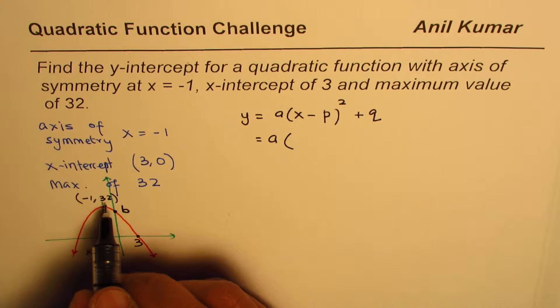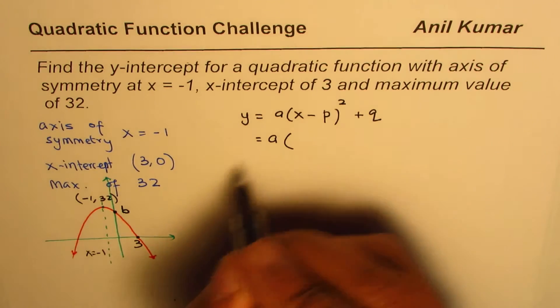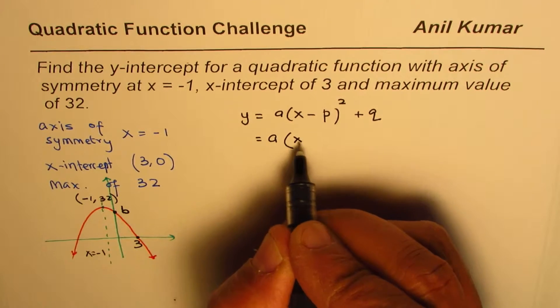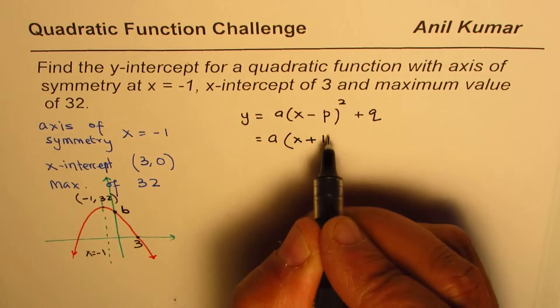So in our case, the coordinates for the vertex are minus 1 and 32, right? So minus 1 for p will make this plus 1 here (minus minus becomes plus), plus 32.